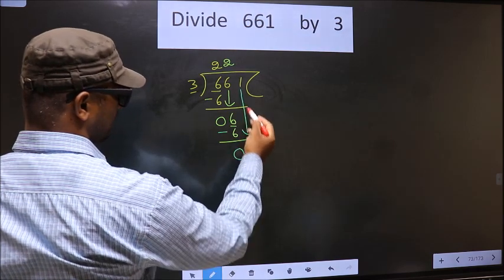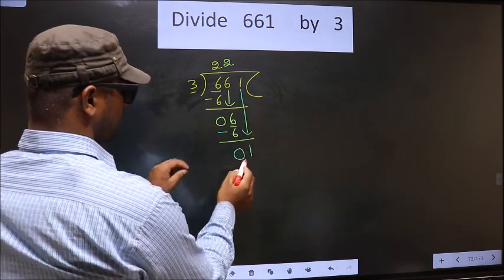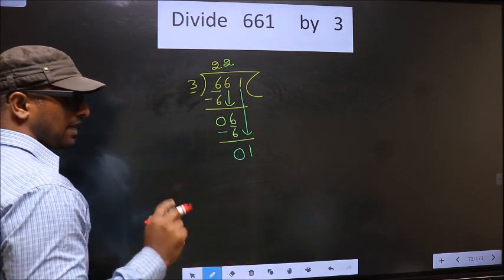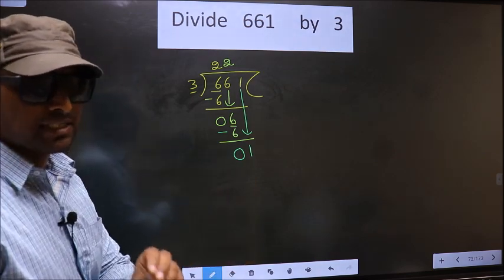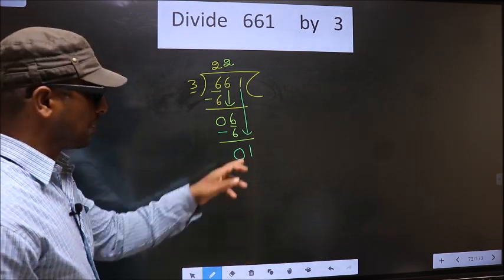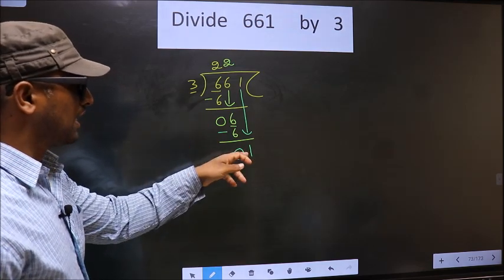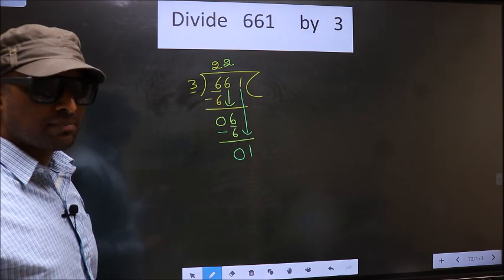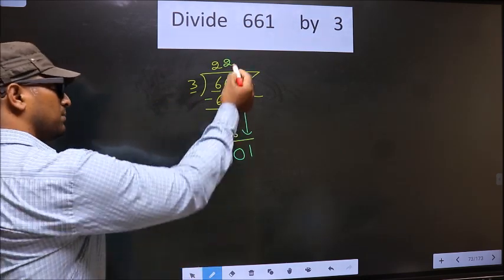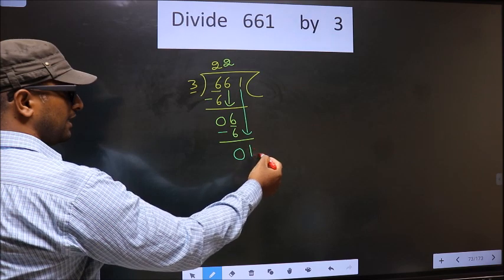Now you bring down the next number 1. This is where the mistake happens, and the mistake is this: here we have 1, here 3. 1 is smaller than 3, so what many do is they put a dot and take 0 here, which is wrong.